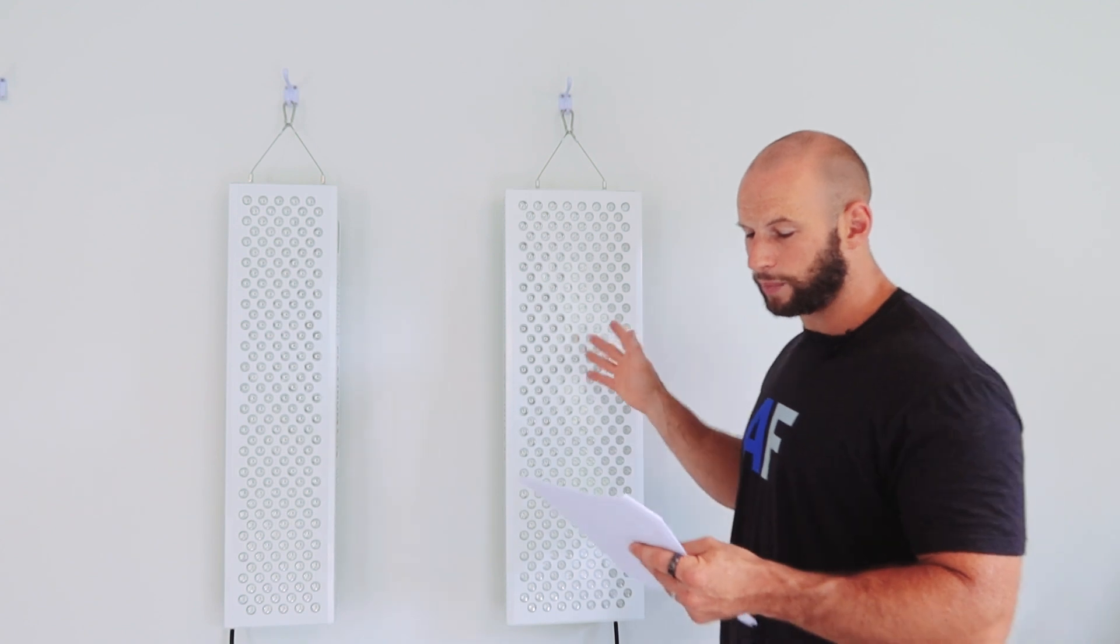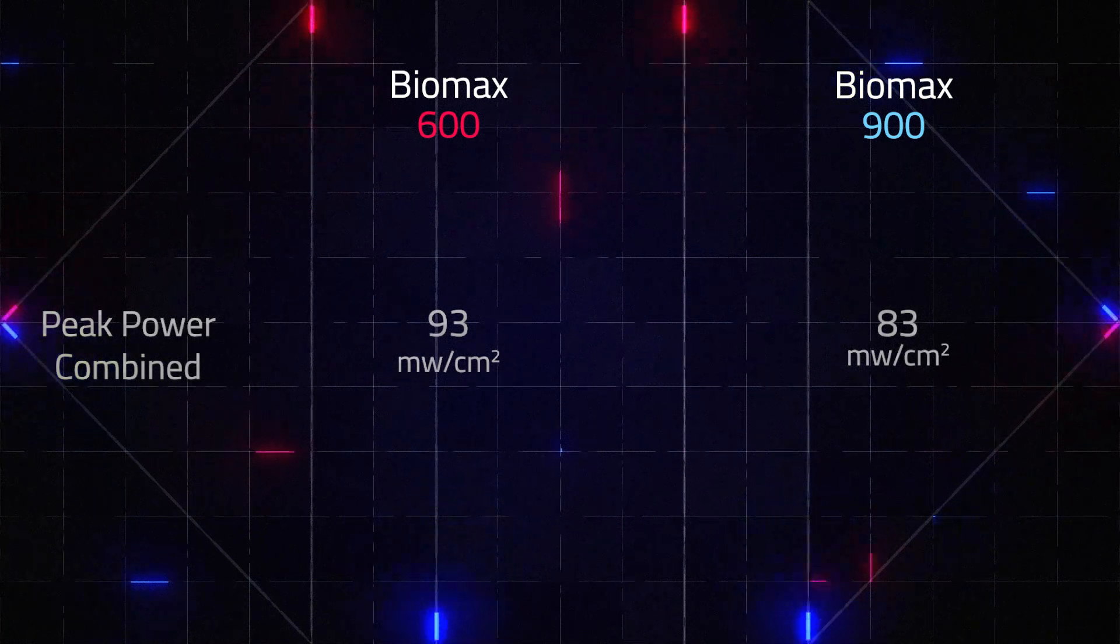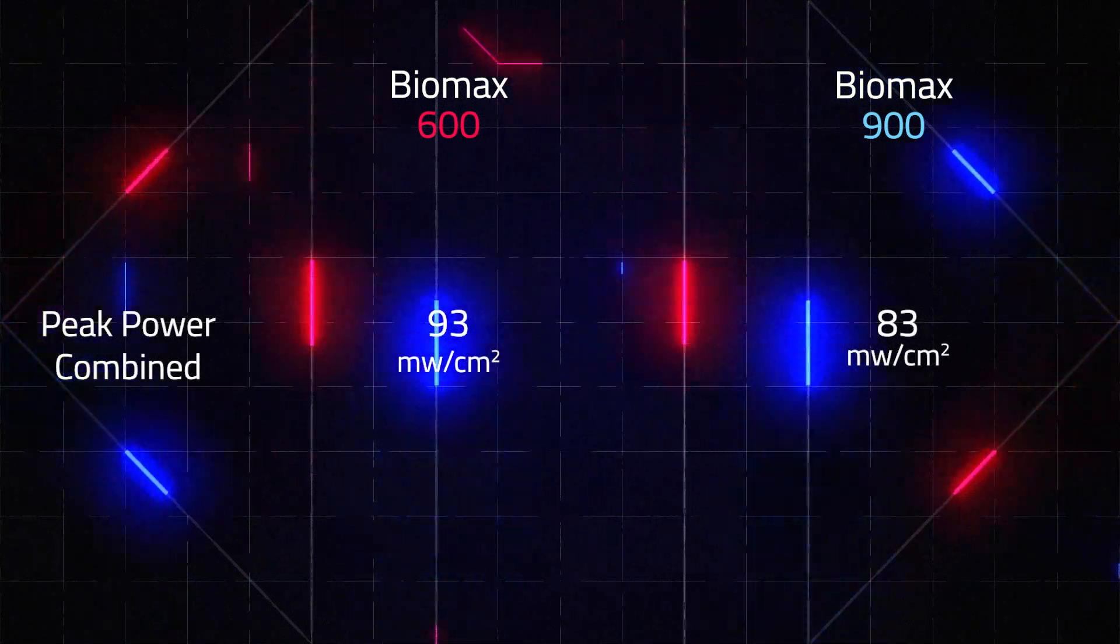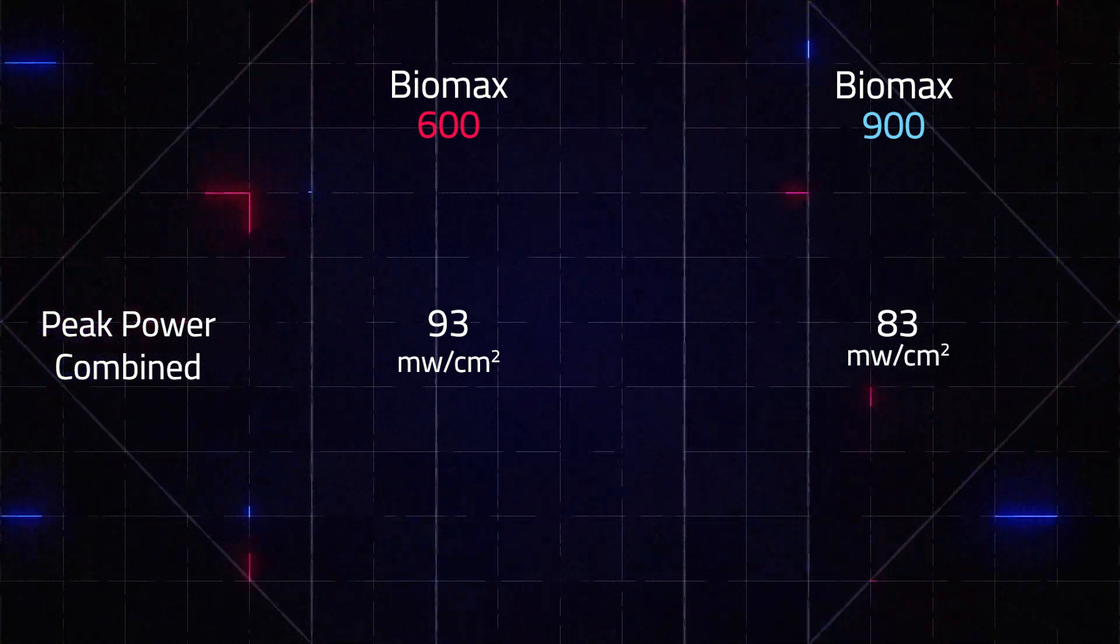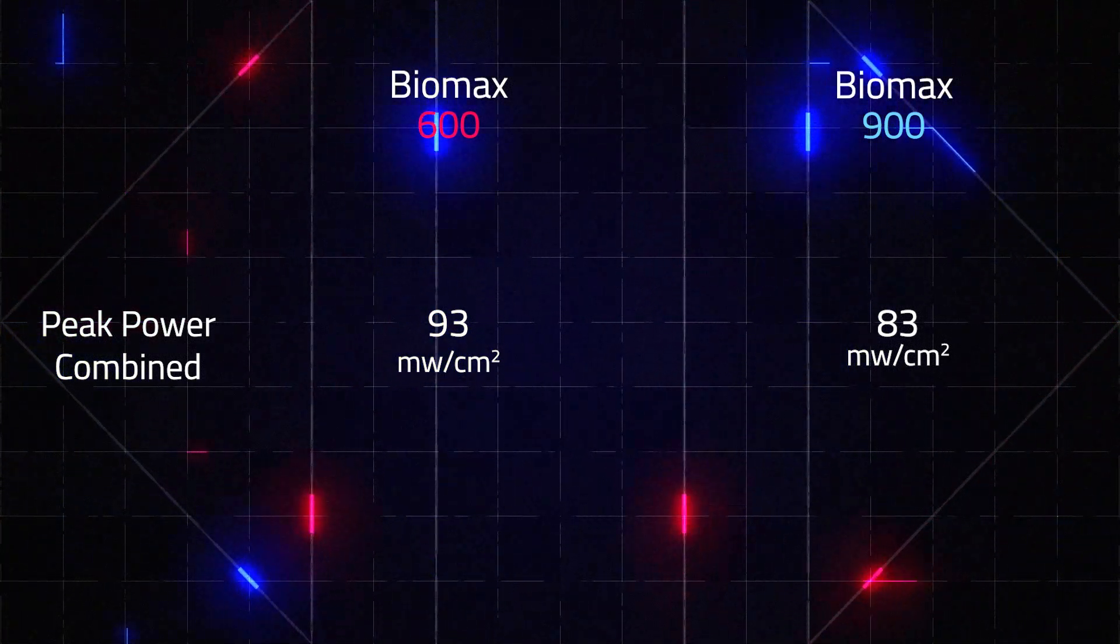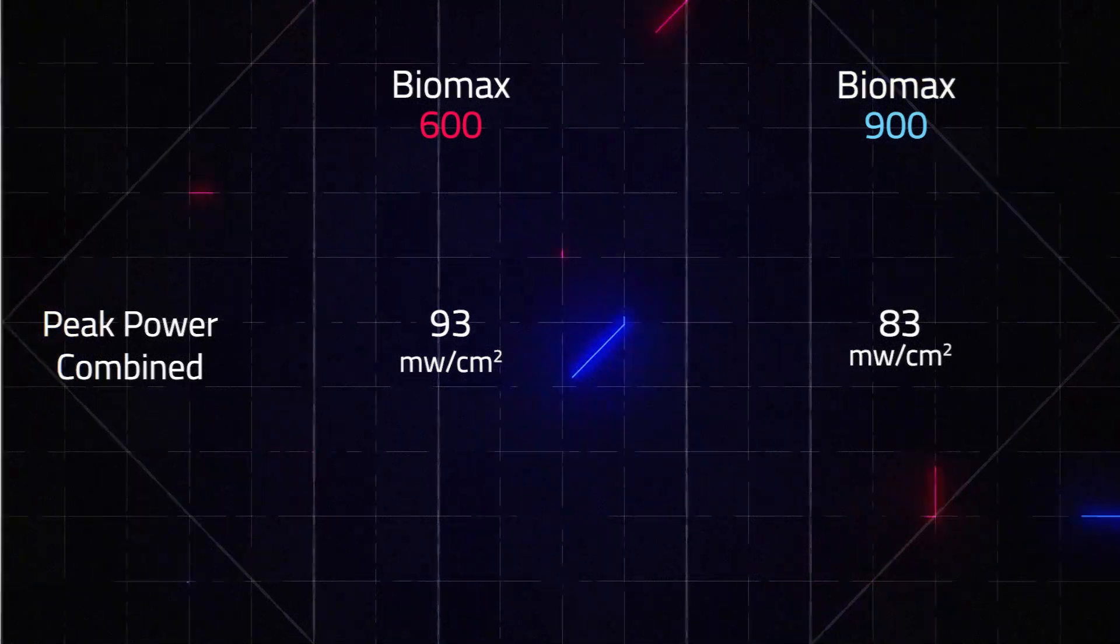There is a slight difference with power output. I've tested both of these panels with my spectrometer. Now what's interesting is this Biomax 600 has tested the highest levels for any panel I've ever tested in all my years—the highest peak levels, which were 93 milliwatts per centimeter squared. In comparison, the Biomax 900 had a figure of 83 milliwatts per centimeter squared, so a 10 milliwatt difference.